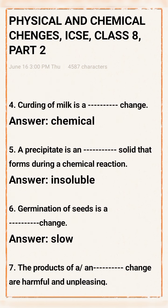Question 4: Curdling of milk is a ___ change. Answer: Chemical change. Question 5: A precipitate is an ___ solid that forms during a chemical reaction. Answer: Insoluble.